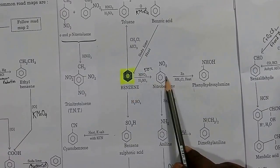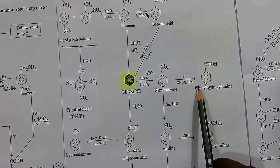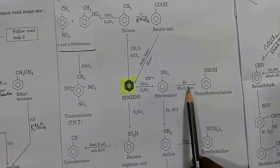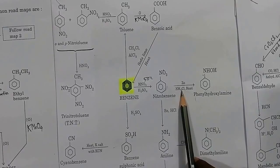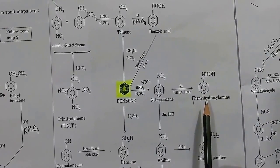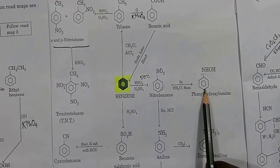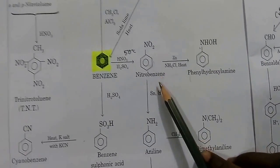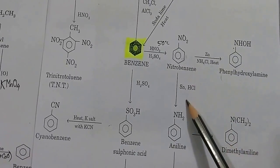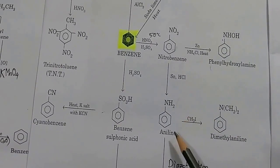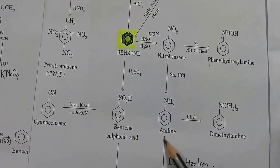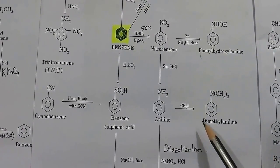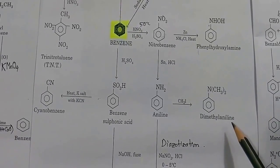Benzene to nitrobenzene we have already discussed, but in this step nitrobenzene is reduced by zinc and NH4Cl and you get phenylhydroxylamine. Nitrobenzene can also be reduced by Sn/HCl to give aniline (already discussed). Aniline can be treated with excess methyl iodide to give dimethylaniline — one very important reaction.